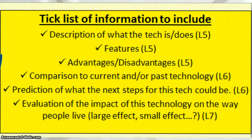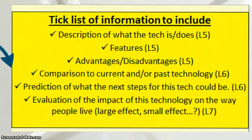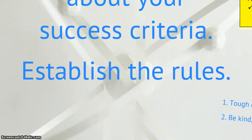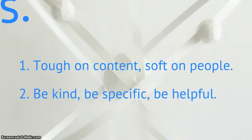This is an example of some success criteria I put up for a piece of work about future technology. I made it really clear what I was looking for, what they should be looking for, and what level that related to as well. Then you establish the rules, which are: be tough on content, be kind — or soft — on people.